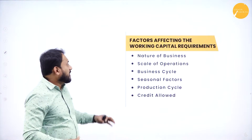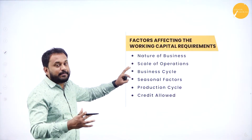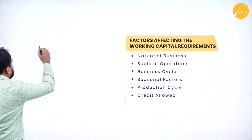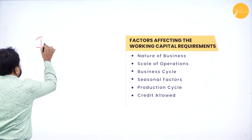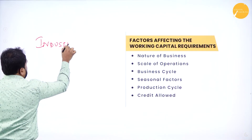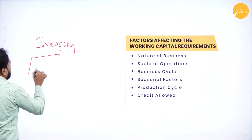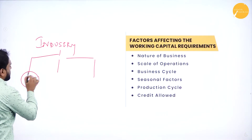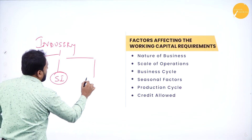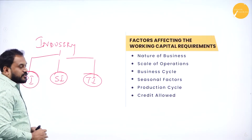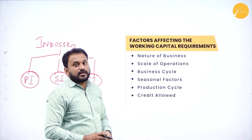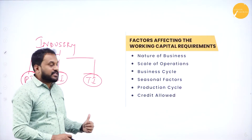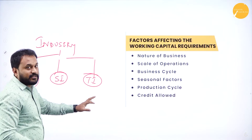Next we have the working capital requirement — the factors which affect working capital requirement. First is industry or nature of business. We have three types of industry: primary industry, secondary industry, and tertiary industry. Primary industry depends on nature, and all the industries depend upon the nature of the business.